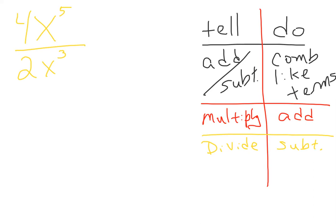The numbers in front, the coefficients, do the division. So four divided by two is two. Now the exponents, they follow the exponent rules. They subtract. So five minus three gives us x squared.